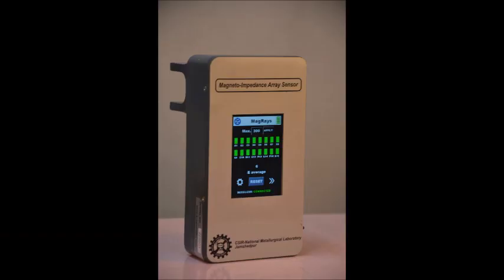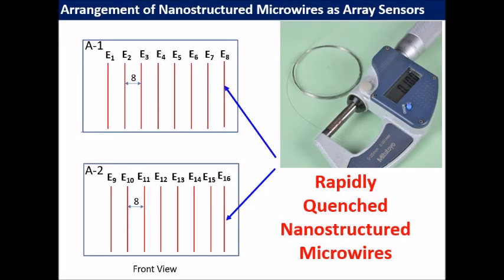To enhance the sensing area coverage, NML Jamshedpur under CSIR, New Delhi has developed a magnetoimpedance-based array sensing device. The device has been coined as MAGRASE. The probe in MAGRASE comprises of two arrays of sensor elements. Each array consists of eight rapidly quenched nanostructured microwires.